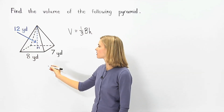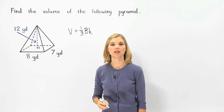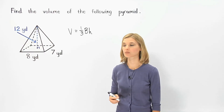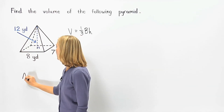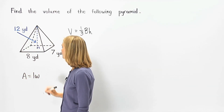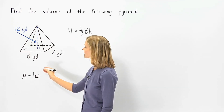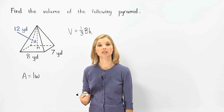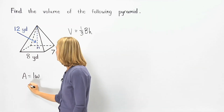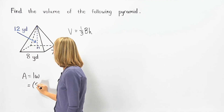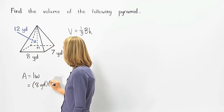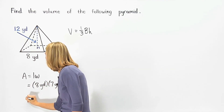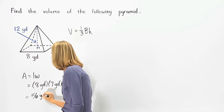Notice that the base of the pyramid is a rectangle, so to find the area of the base, we use the formula for area of a rectangle, which is: area equals length times width. Since the length of the rectangle is eight yards and the width is seven yards, we plug this in to get eight yards times seven yards, which equals fifty-six yards squared.